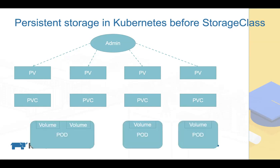Then there would be PVCs trying to bind to those PVs. Pods have volumes that point to a PVC, and Kubernetes tries to match the PVC to any existing PV using parameters like capacity and performance. Once Kubernetes finds a PV that meets the PVC's requirements, they get bound — the PV status becomes 'Bound' and the pod can start using it.